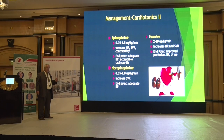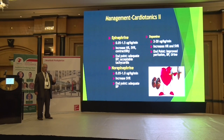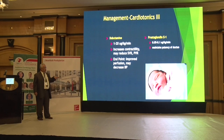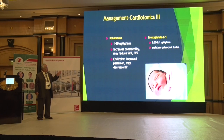Dopamine: 2 to 20 mcg/kg/min — increases heart rate and systemic vascular resistance; endpoint is to improve perfusion, blood pressure, and urine output. Dobutamine is a cardiotonic: dose 1 to 20 mcg/kg/min — it increases contractility and reduces systemic and peripheral vascular resistance, so watch blood pressure and you may need to increase epinephrine or norepinephrine. Endpoint is to improve perfusion.